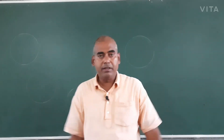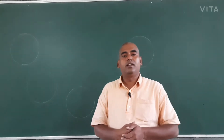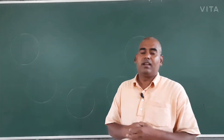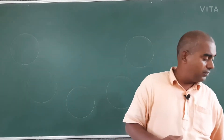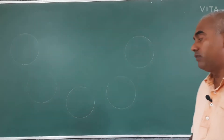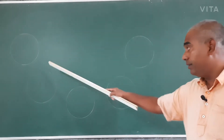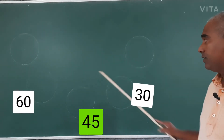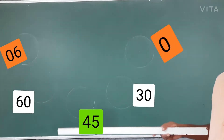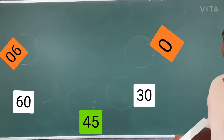Good morning, dear friends. In my earlier two videos I have told you how to find trigonometrical ratios for 45 degrees, 30 degrees, and 60 degrees. Today I will teach you 0 degree and 90 degree.